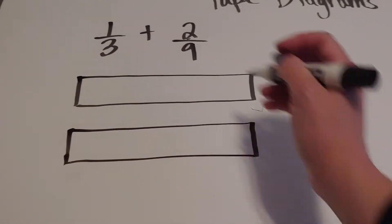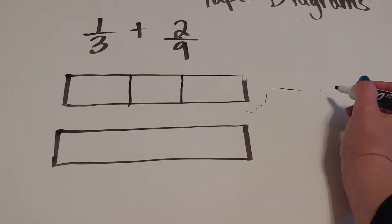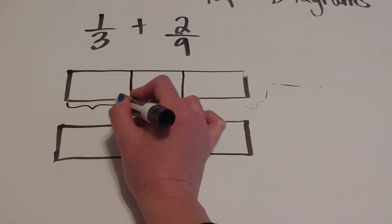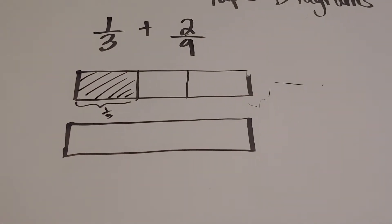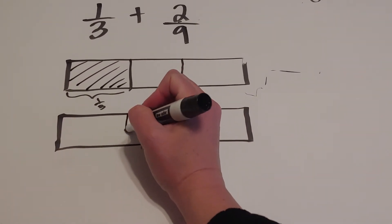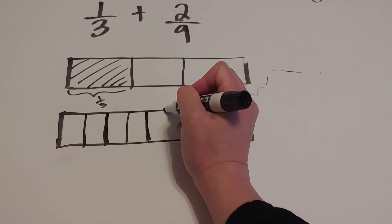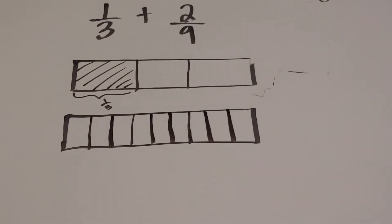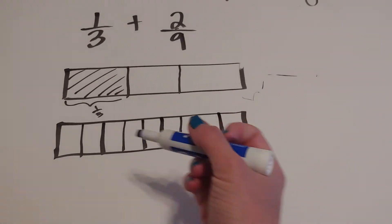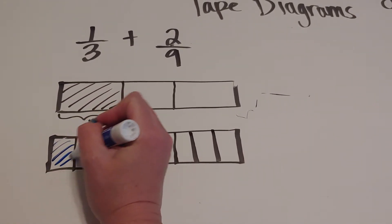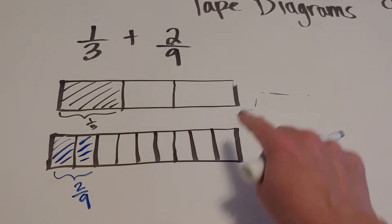This first one I'm going to cut into thirds, and this is going to represent one-third. And now this one I'm going to cut into ninths for two-ninths. So of course I need to shade two-ninths. And I want to know how many-ninths this is.